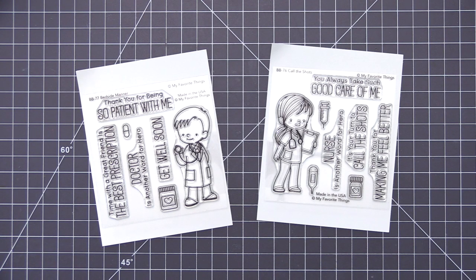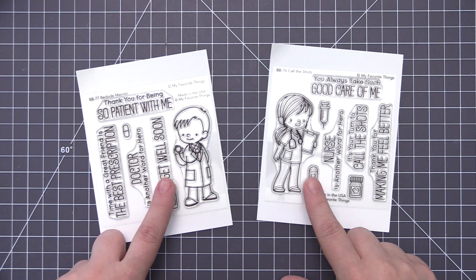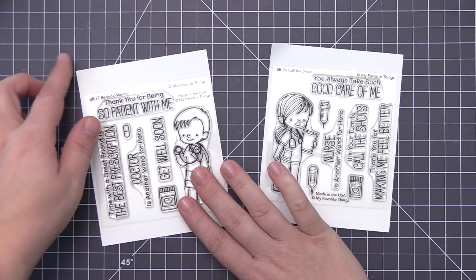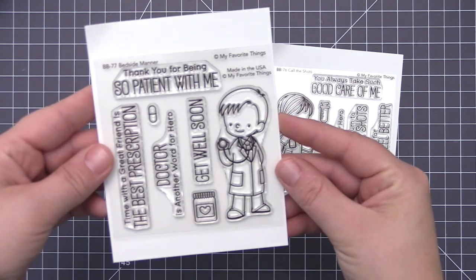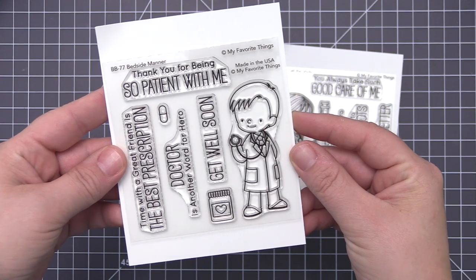Hi everyone, it's Stephanie here and welcome back to another video. Today we're going to be playing with the two newest Birdie Brown stamp sets. This one here is called Bedside Manor and the other one is called Call the Shots.